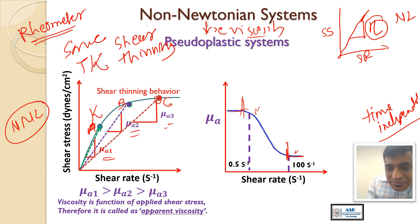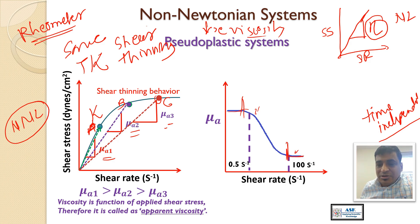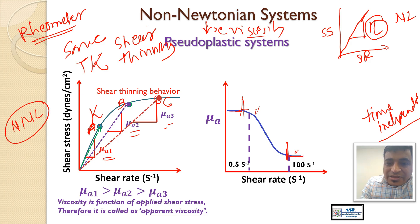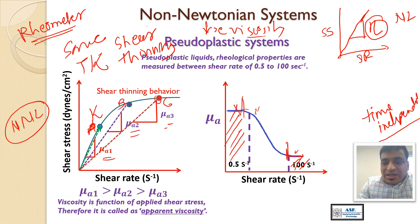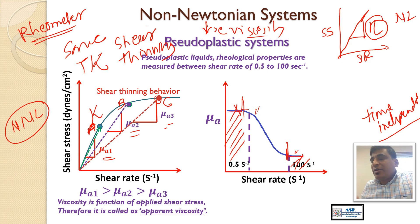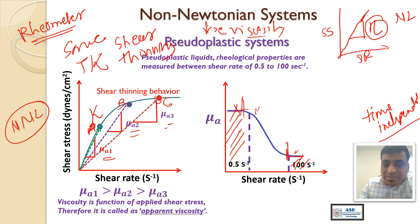The regions where viscosity is not changing are below 0.5 per second and above 100 per second shear rate. There is no point measuring the viscosity of pseudo-plastic systems in those regions. For example, when measuring the viscosity of your coating solution, do not measure below 0.5 per second or above 100 per second shear rate, because viscosity is not changing there.